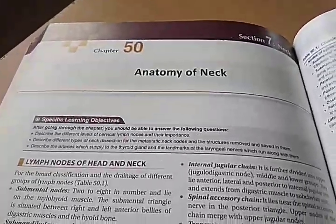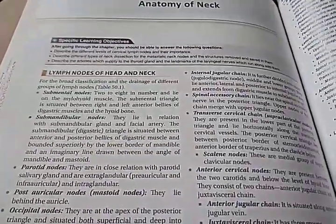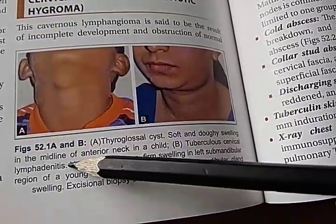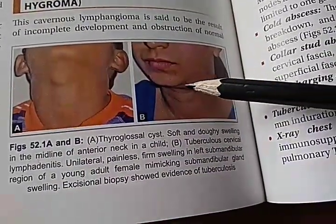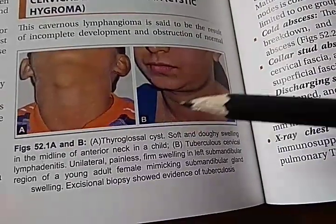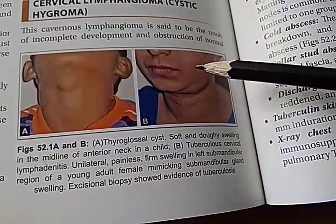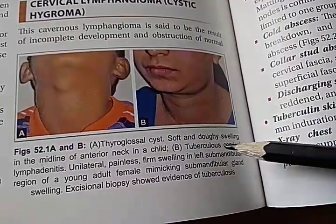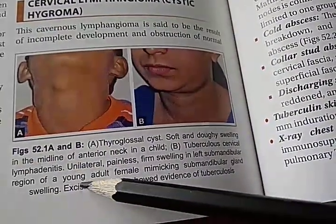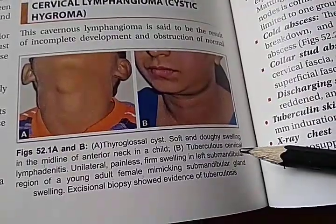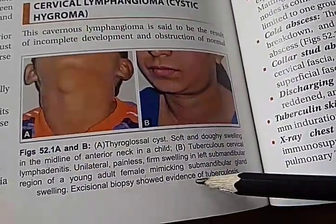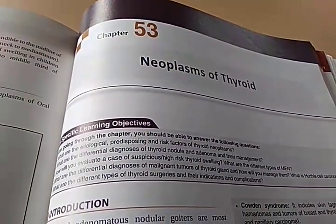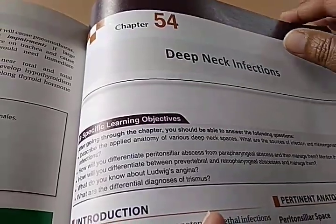Finally, they are coming to the neck — lymph nodes of head and neck. Here is the second case: tuberculous cervical lymphadenitis — a very nice case. It reads: unilateral painless firm small swelling in the left submandibular region of a young adult female, mimicking submandibular gland swelling; excisional biopsy shows evidence of tuberculosis. While here they are also covering thyroid and deep neck infections.